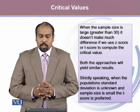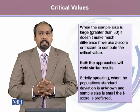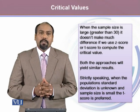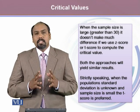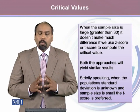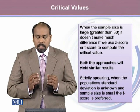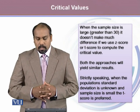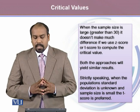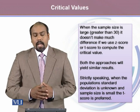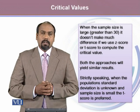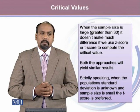When the sample size is large, say greater than 30 — though this is not a strict rule — it does not make much difference whether we use the z-score or t-score to compute the critical value, as both approaches yield similar results. Strictly speaking, when the population's standard deviation is unknown and the sample size is small, the T distribution is the preferred distribution.